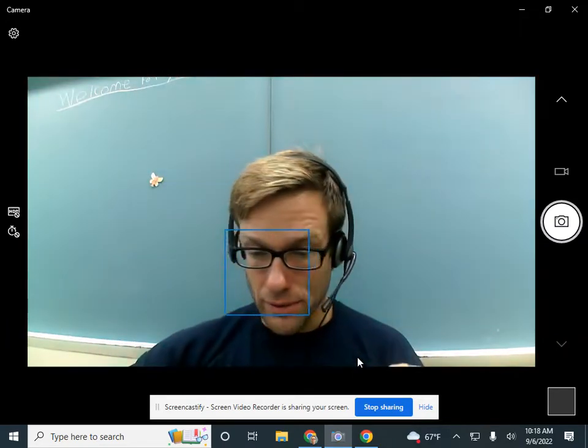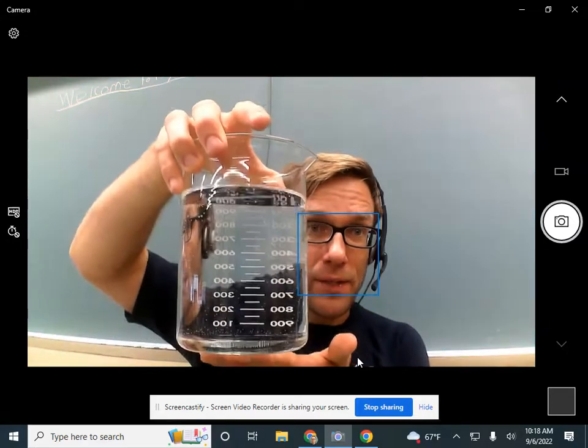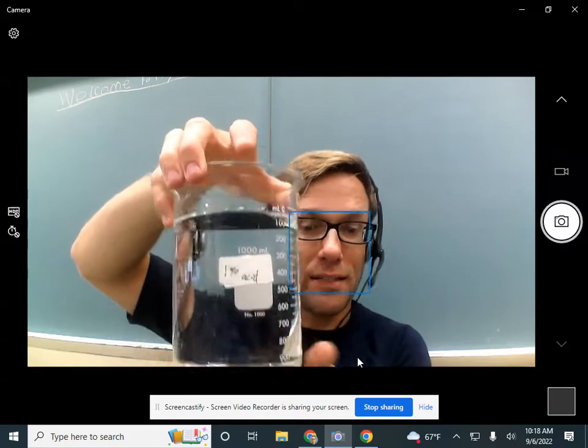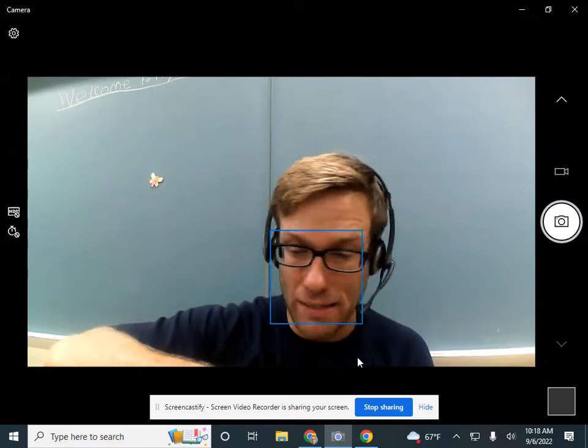The acid we're going to be using is in this beaker. And what it is, is vinegar diluted down to different concentrations. I have the 1% here as my example. So one of the groups has that.